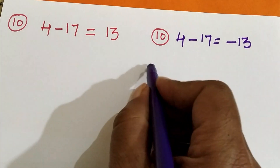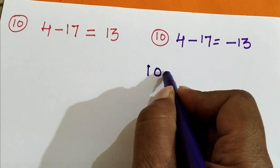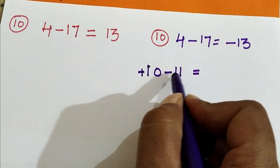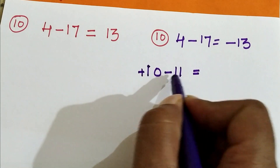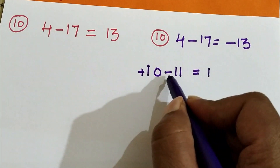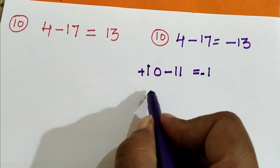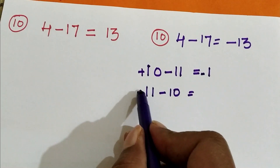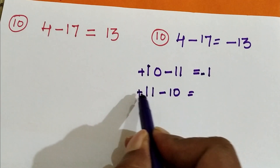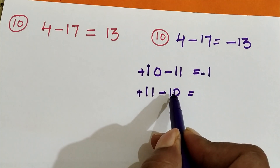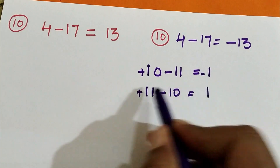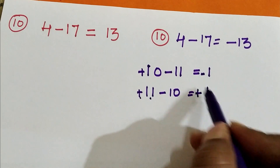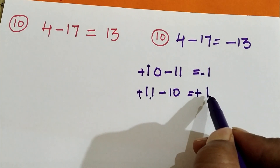Let's see one more similar problem: 10 minus 11. Symbol of 10 is plus, symbol of 11 is minus. Plus and minus is subtraction: 11 minus 10 is 1. The bigger number is 11, its symbol is minus, so the answer is minus 1. Compare with 11 minus 10: symbol of 11 is plus, symbol of 10 is minus. 11 minus 10 is 1, bigger number is 11 with symbol plus, so the answer is plus 1.